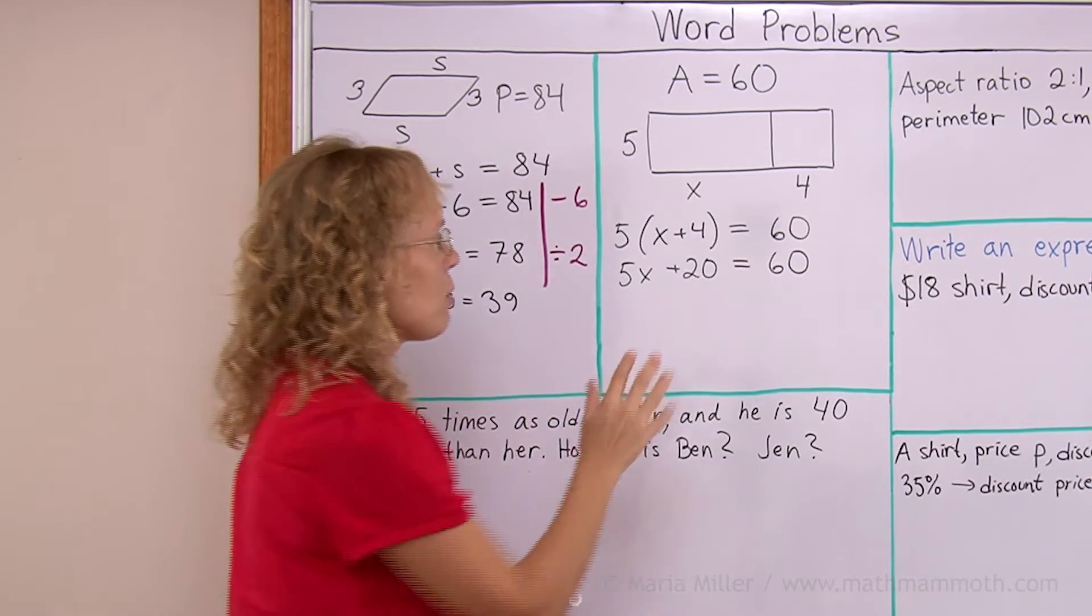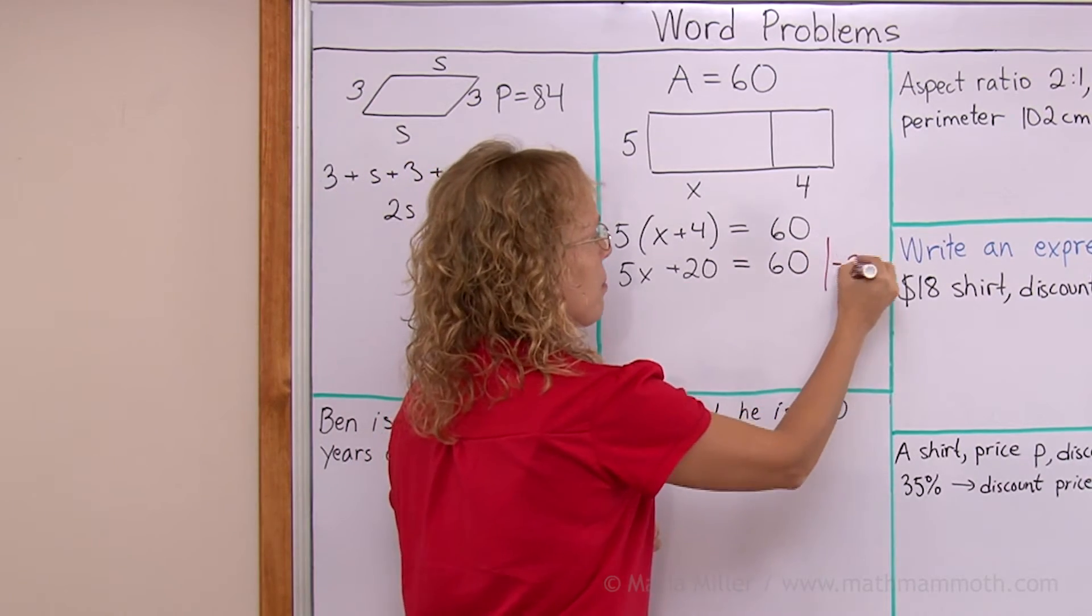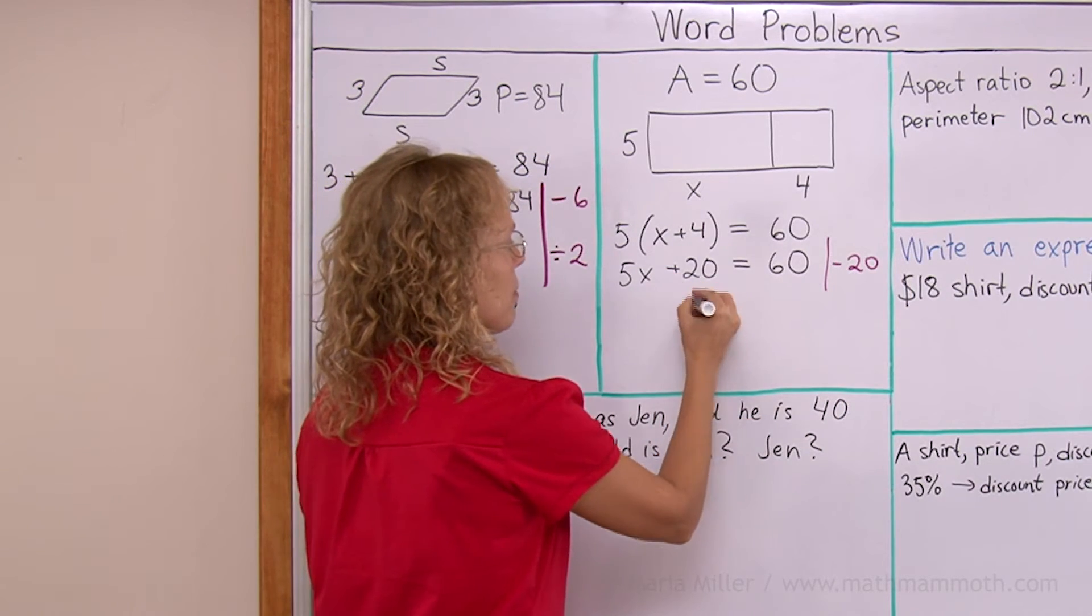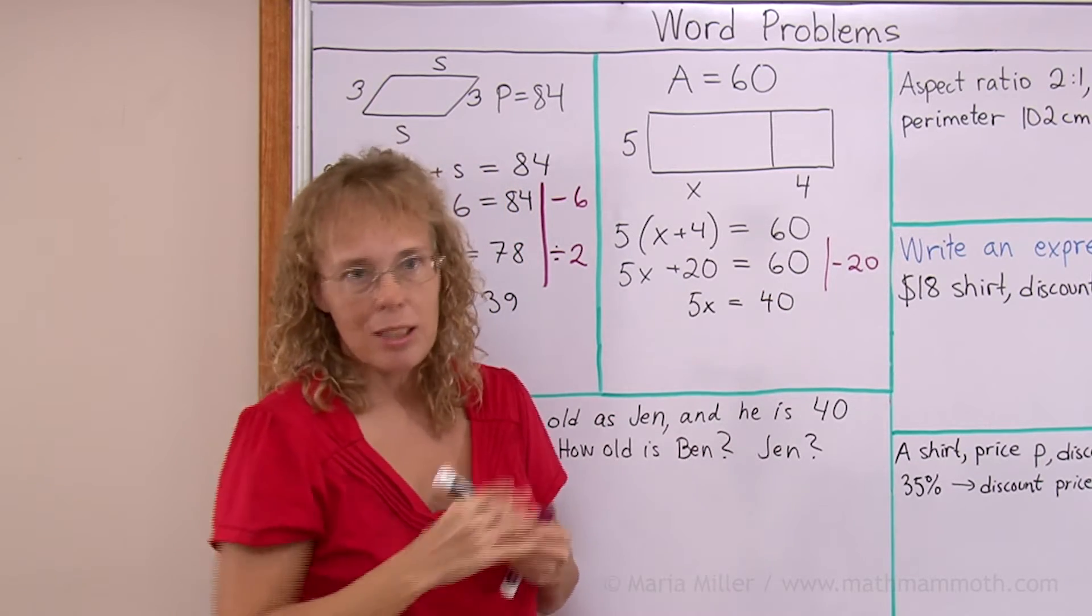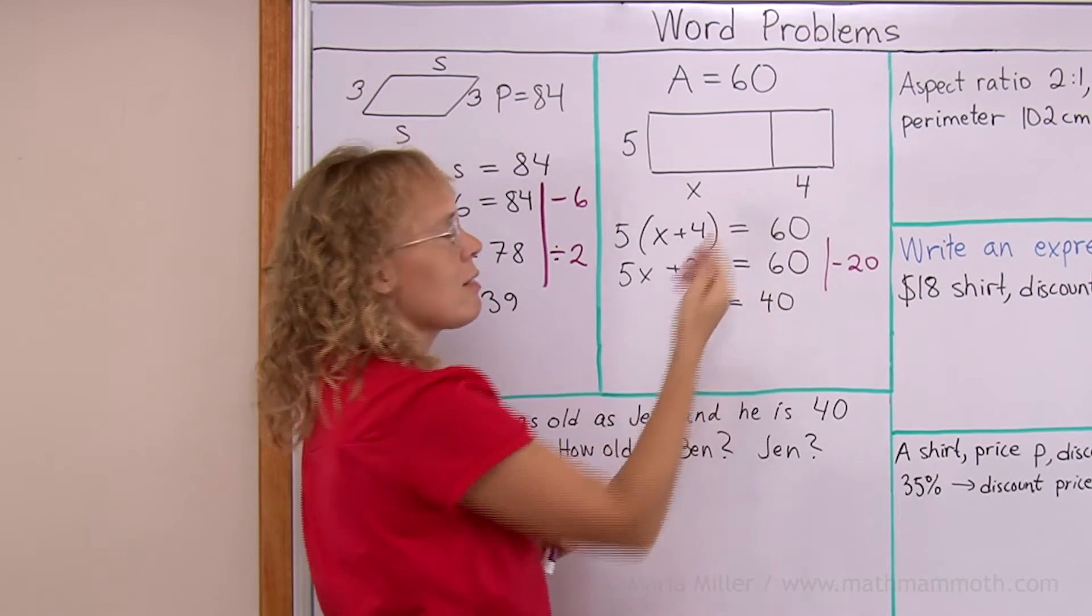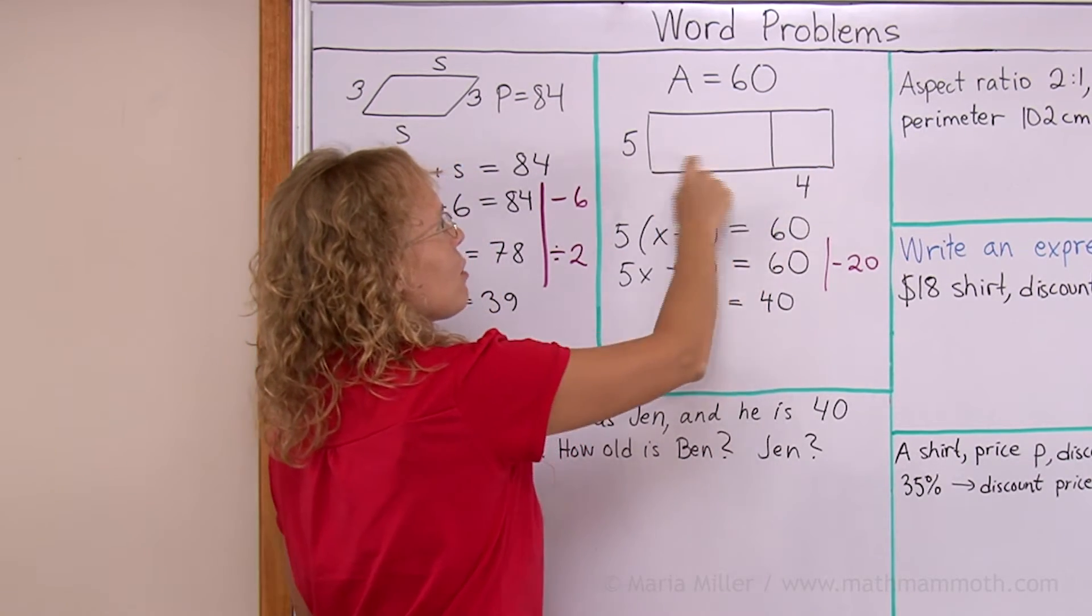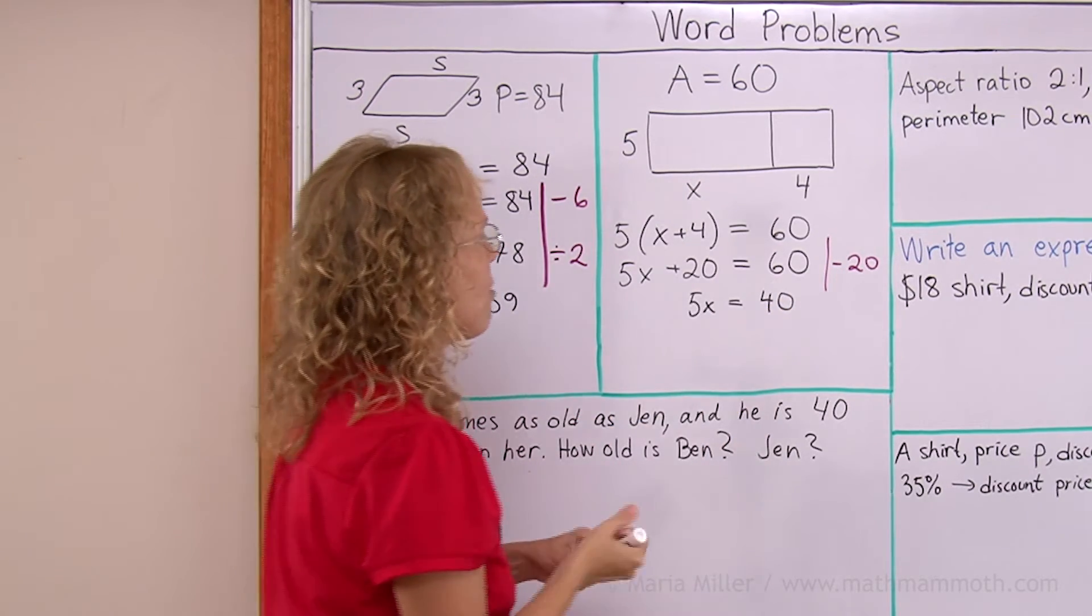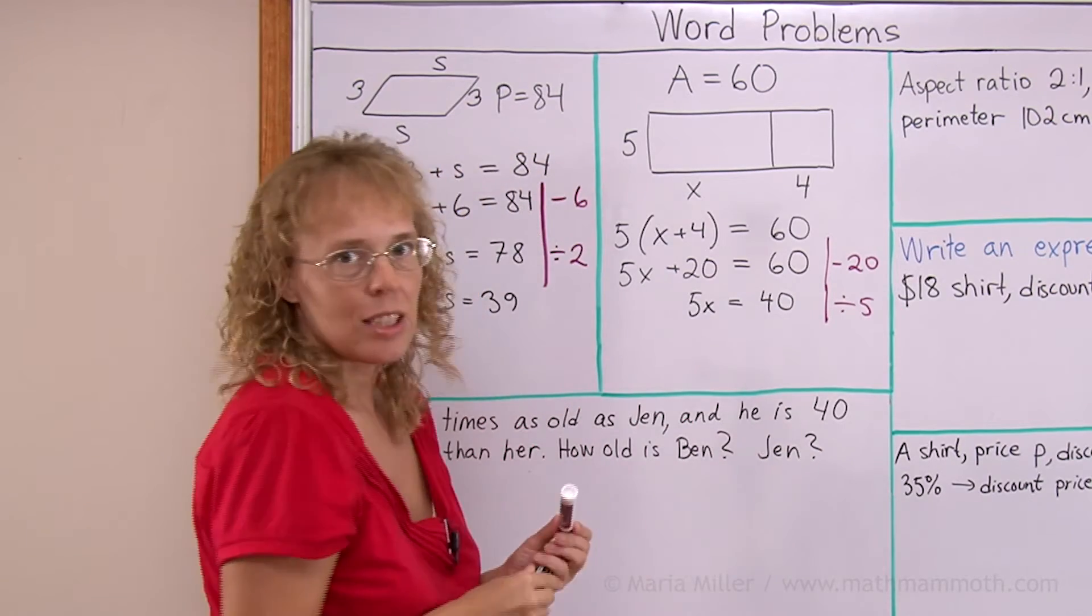So we get 5x plus 20 equals 60. And now, when we solve this equation, we get rid of the 20. We subtract 20 from both sides. And so we get 5x equals 40. This is exactly what I did when I was explaining it here. I was noting that this is 20. The area of this rectangle is 20. And so I subtracted that from 60 to get that this would be 40. That's exactly what's happening here too. And now, lastly, 5x equals 40. So we divide by 5 to get x equals 8.